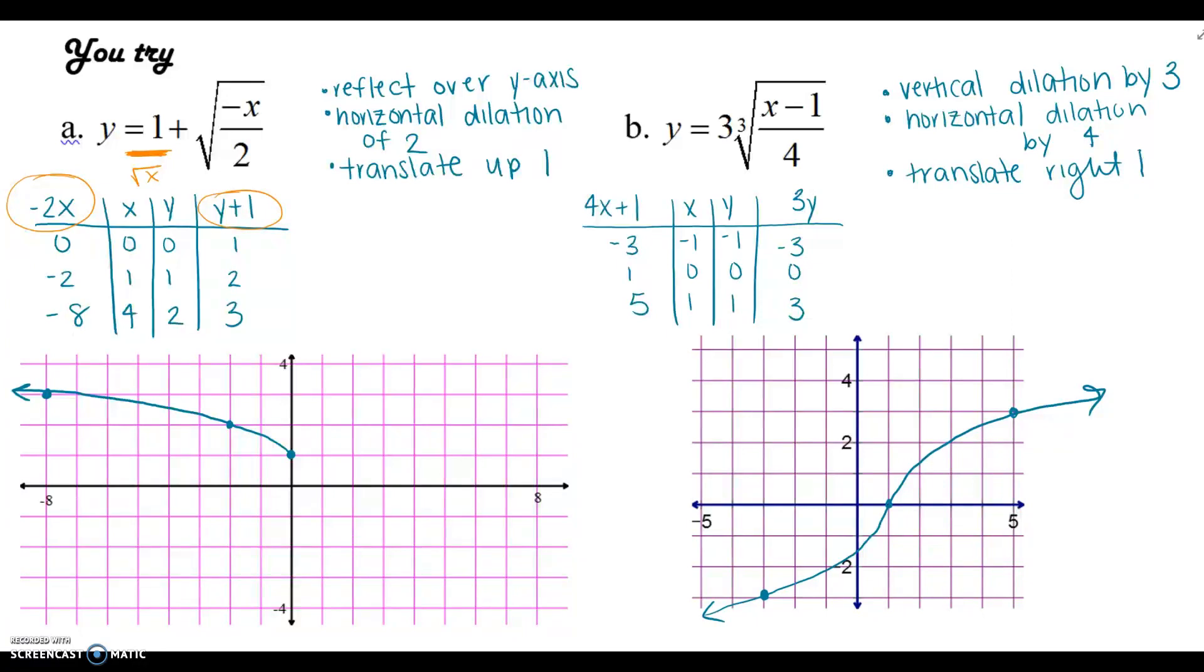Looking at b. So, this one's cubed root. So, when I did my table, the parent was the cubed root of x. Looking at what I was given, I've got a vertical dilation by 3 because it's being multiplied by 3. A horizontal dilation by 4 because it's over 4. So, it's reciprocal. And then, it's x minus 1. So, that's going to the right. So, then I use each of these transformations and apply it to my table. So, horizontal dilation will be 4x. And then, right one is plus 1, 3y for vertical. Substitute. And there are my key points. And I actually had a pretty good graph. So, that's nice.